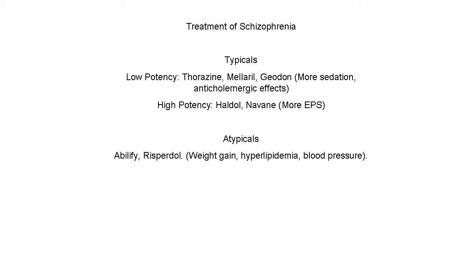The atypicals are the newer generation. They include medications like Abilify and Risperdal that are very commonly used as first-line medications for schizophrenic patients. These have some other problems, though, including weight gain, high cholesterol, hyperlipidemia, and blood pressure problems. With the newer medications, they actually have a negative effect on lifespan, which is a major concern.